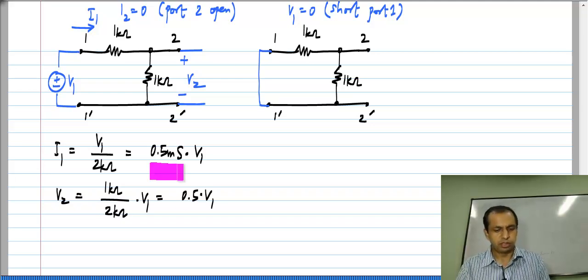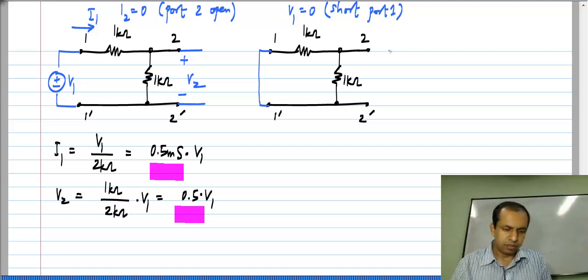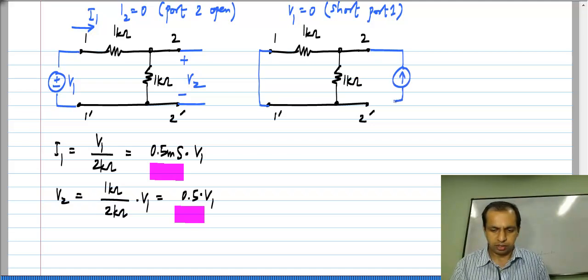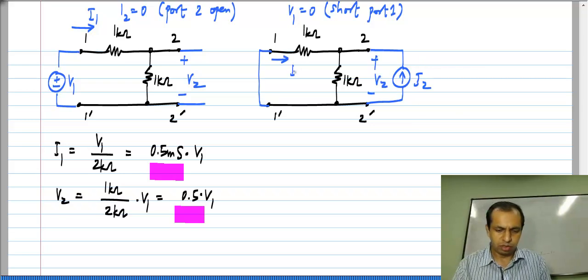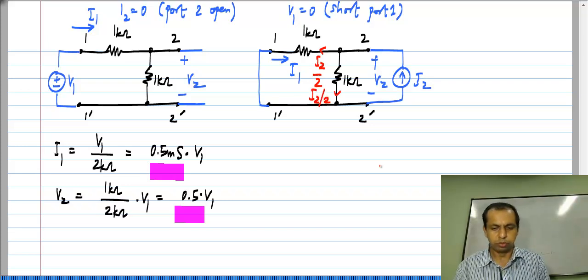This is G11, this is G21, and similarly for the other two parameters I apply a current I2 to port 2 and measure V2 and I1. Now, this current I2 divides into two equal parts because the two resistors are equal and we will have a current I2 by 2 that way and I2 by 2 through this resistor.